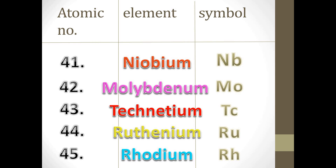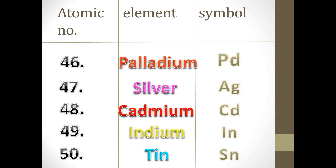The 45th element is Rhodium and its symbol is Rh. The 46th element is Palladium and its symbol is Pd. The 47th element is Silver and its symbol is Ag. The 48th element is Cadmium and its symbol is Cd. The 49th element is Indium and its symbol is In. And lastly, the 50th element is Tin and its symbol is Sn.